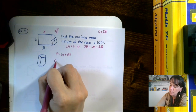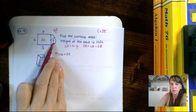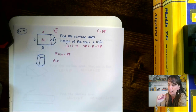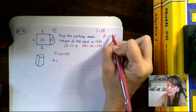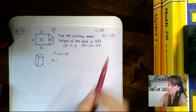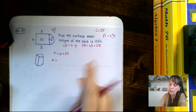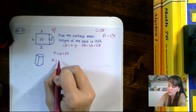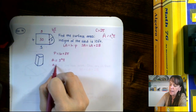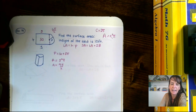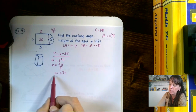Now we have to find the area of the composite base. The rectangle part is 6 times 5, which gives us 30. Then for the semicircle, remember: 'Apple pies are r-squared' — area equals radius squared times pi. Our radius is 3, so 3 squared is 9 pi, but we only have half of it, so we divide by 2: that's 4.5 pi. So we now have our perimeter of 16 plus 3 pi, and our area of 30 plus 4.5 pi.